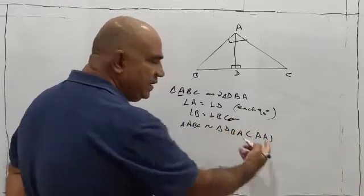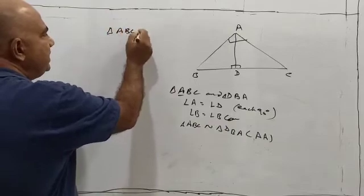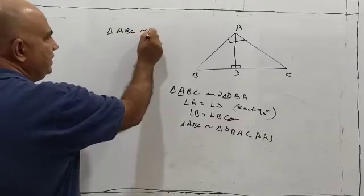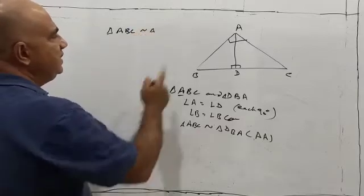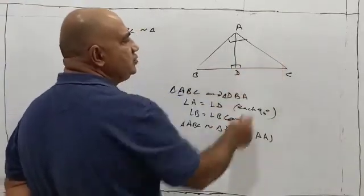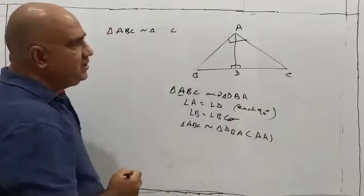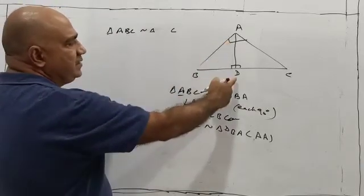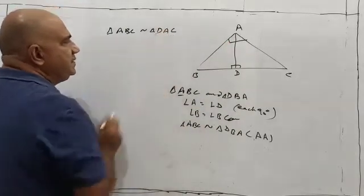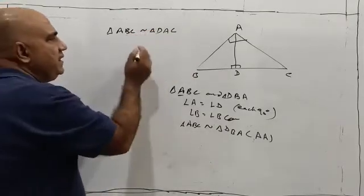So triangle ABC is similar to triangle DBA, and the criterion is AA. In similar fashion, for triangle ABC and the other smaller triangle ADC, angle C is common. C occupies third position, so write C at third position. In triangle ADC, angle D is the right angle — so D occupies second position. The third vertex remaining is A. So triangle ABC is similar to triangle DAC.